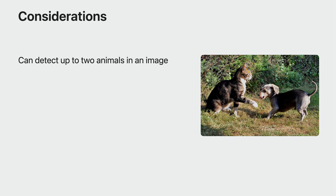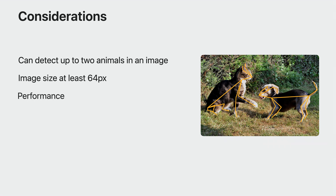There are some considerations to keep in mind. Using the new animal body pose, you can detect up to two animals in an image. The input image size should be at least 64 pixels on each side. And by using the neural engine, the performance can keep up with live capture.